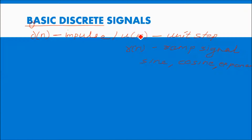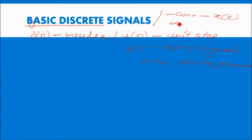I am showing you u of n. Generally, if the system is continuous, it is represented as x of t. And if it is discrete, it is represented as x of n. So t is the representation for continuous, and n is for discrete representation.